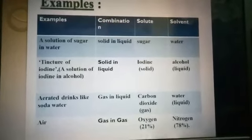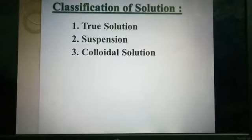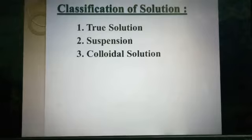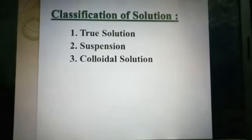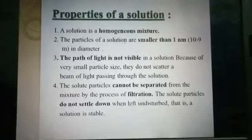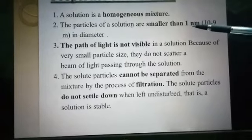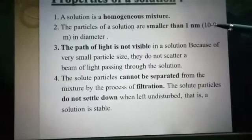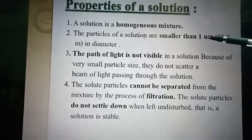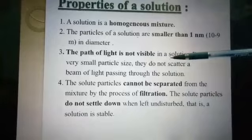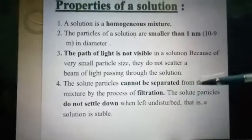The classification of solutions: solutions are of three types — true solution, suspension, and colloidal solution. True solution is also simply known as solution. Properties of a true solution: they are homogeneous; particle size is very small, around 10 to the power minus 9 meters, also known as nanometers in diameter; the path of light is not visible in solution because of the very small particle size.